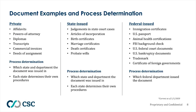Private document examples include affidavits, power of attorney, diplomas, transcripts, commercial invoices, and deeds of assignment. Process determination for these depends on which state and department the document was issued in, as each state has its own procedures. State-issued document examples include judgments in state court cases, articles of incorporation, birth certificates, marriage certificates, death certificates, and probate wills — again, each state and department determines their own process.